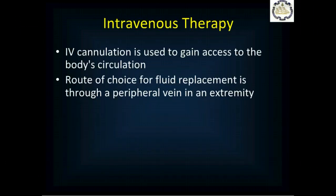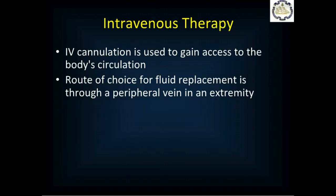We cannulate a vein — intravenous cannulation — which gains access to the body's circulation on the venous side, and it's our route of choice for fluid replacement. We go through a peripheral vein in an extremity, preferably the arms. In the event of an emergency where we can't get something in the arms, we would consider the legs.